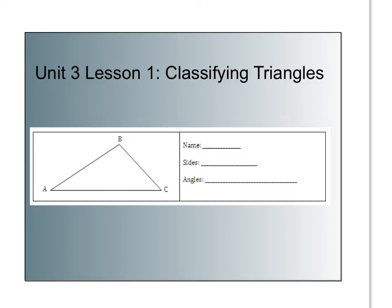So I would call this triangle ABC. You just use a little triangle symbol and the three capital letters. You want to make sure you're using capital letters because the vertices have capital letters by them.